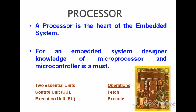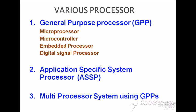The processor is the heart of embedded systems. In the processor we dump the programs, which control what input is taken and what output is produced. The processor is the main component inside an embedded system. It consists of a control unit and an execution unit, and its operations involve fetching and executing tasks. Types of processors include general-purpose ones like microprocessors, microcontrollers, embedded processors, and DSP processors, as well as application-specific system processors.